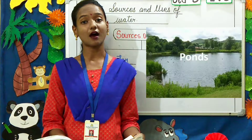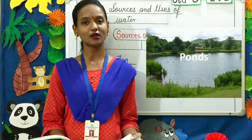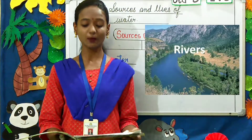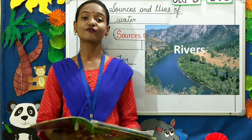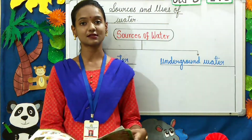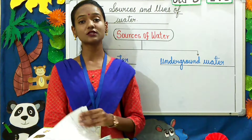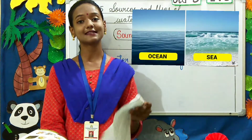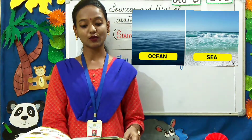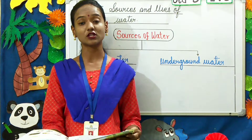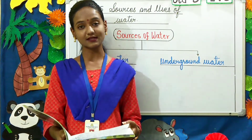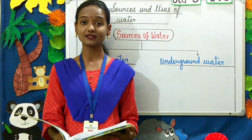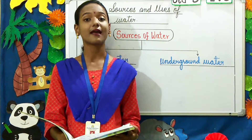Ponds are small water bodies. Lakes are large water bodies. Rivers are water bodies that have water flowing from the mountains, and the river flows and joins the largest water body on the earth, called seas and oceans. 97% of the water on the earth is present in the form of seas and oceans, and the water in the seas and oceans is very salty.